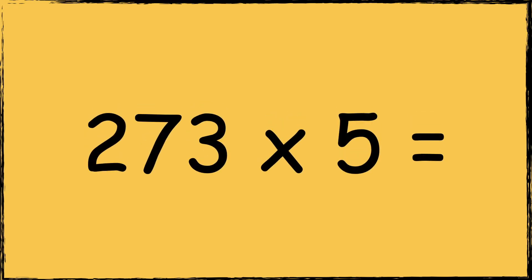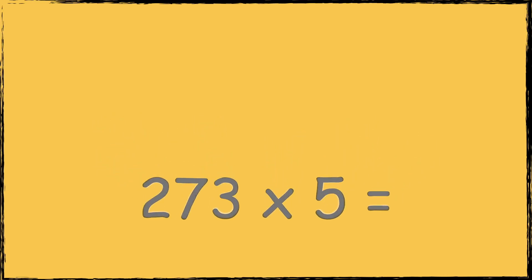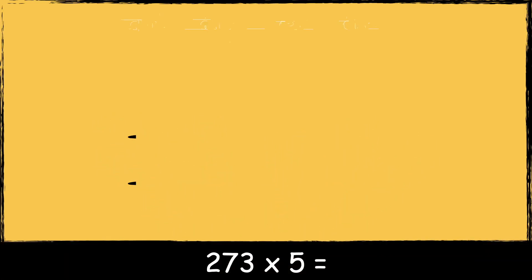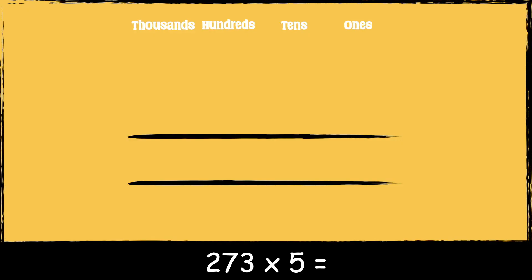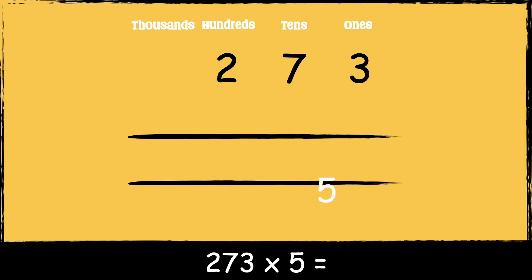Here's the next calculation: two hundred and seventy-three times five. First we make sure the numbers are lined up accurately. The number 273 has three ones, seven tens, and two hundreds. The number five has five ones. Now that we're set up, we're ready to multiply.